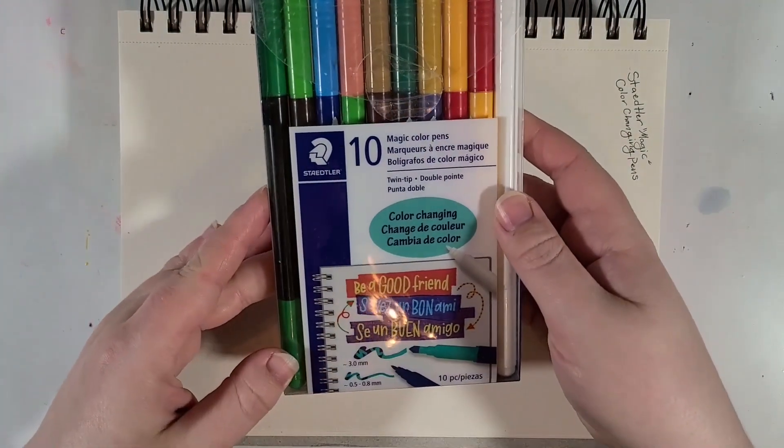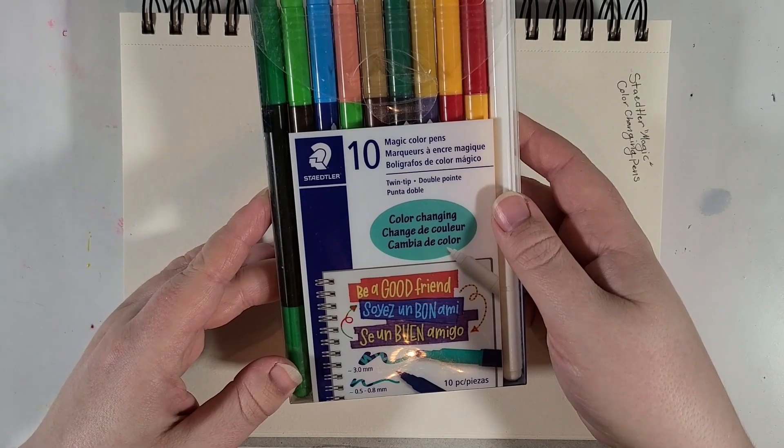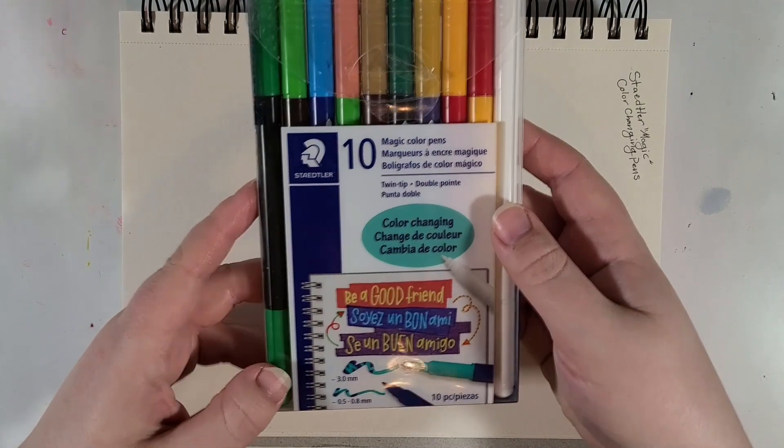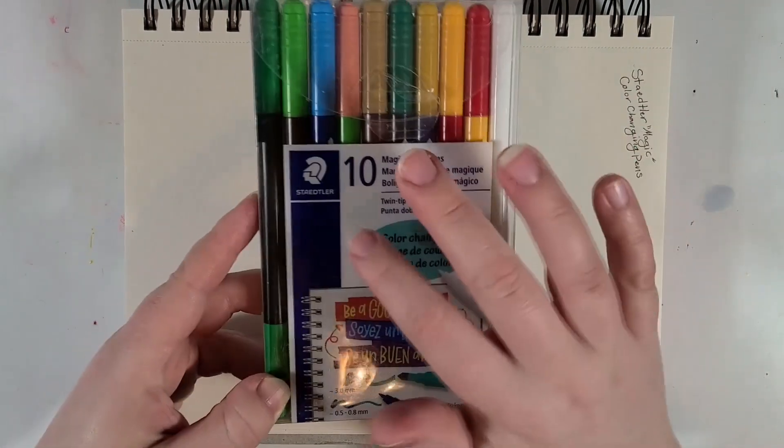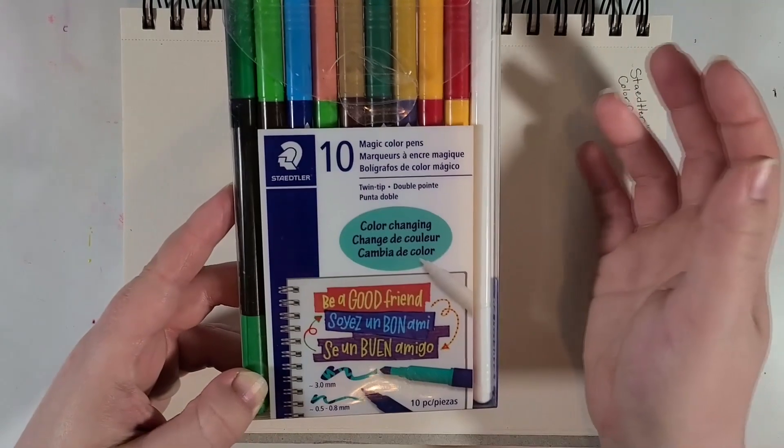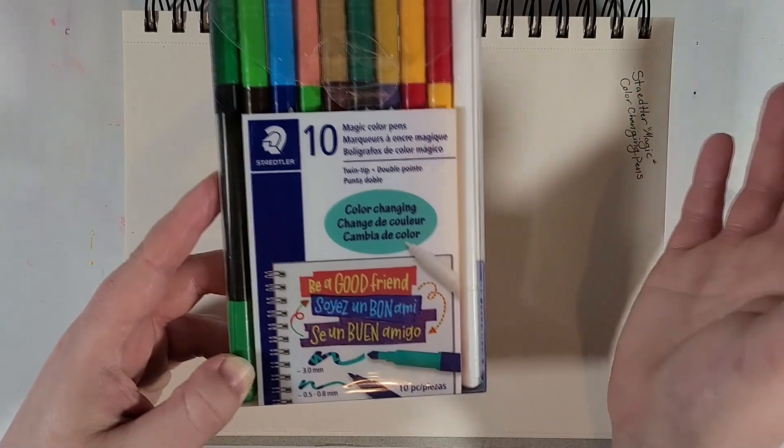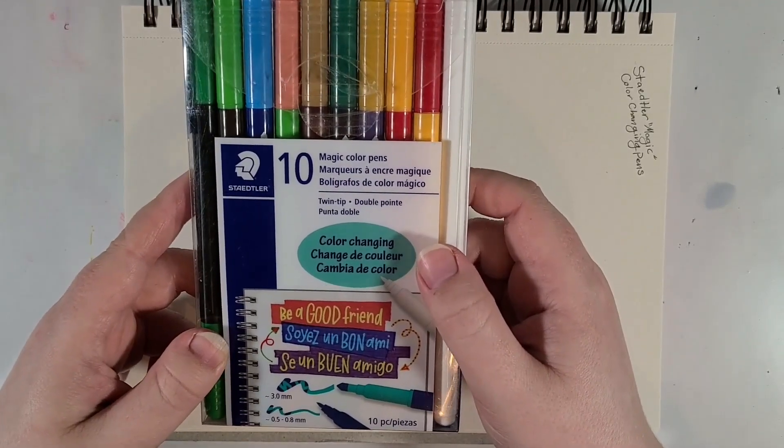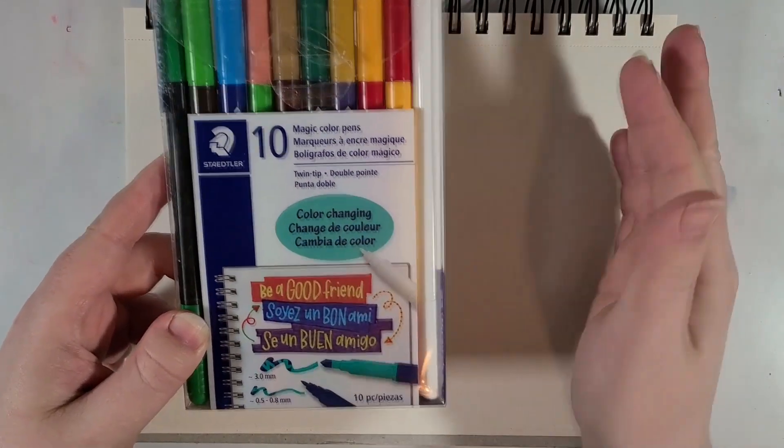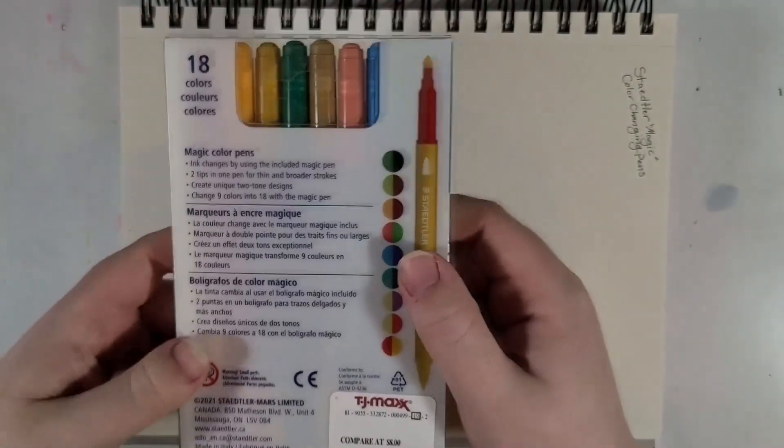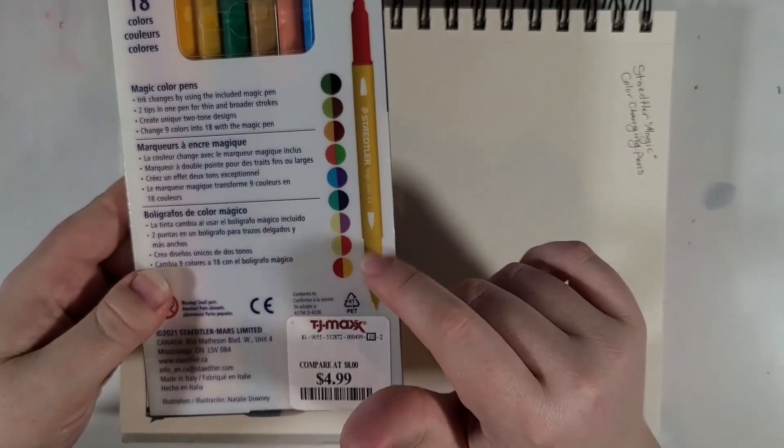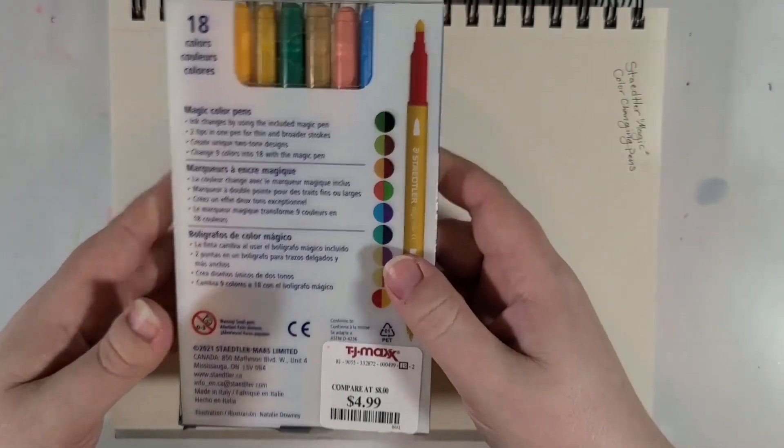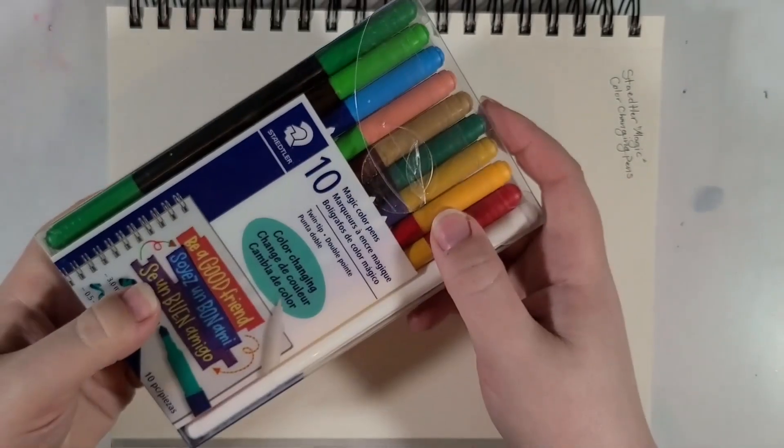What I have here are the Staedtler. I hope I'm saying that correctly. If I'm not, I do apologize. Anyways, it's that brand of pen that has what looks like a Roman Centurion or a Spartan or something like that on it. And what these are, these are magic color pens. They're color changing. However, since I had used the erasable ones and they were actually erasable, I am very hopeful for these. I hope that these work out.